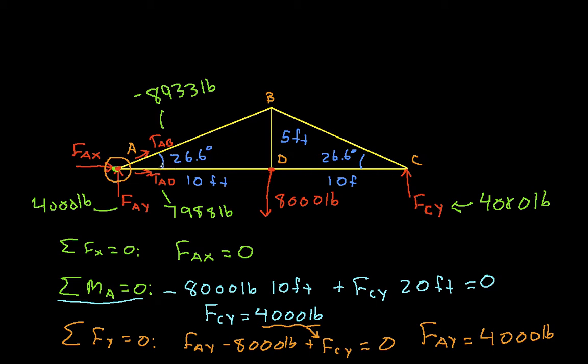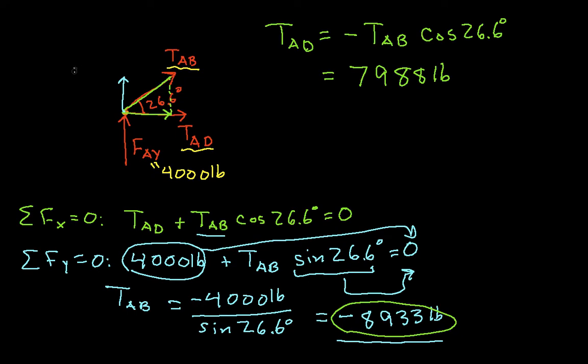That was fun. Let's now do the free body diagram of pin B. Let's draw a free body diagram of pin B. Pin B has TAB, TBD, and TBC. We know that the angle between these vectors and the horizontal for both of these is 26.6 degrees.